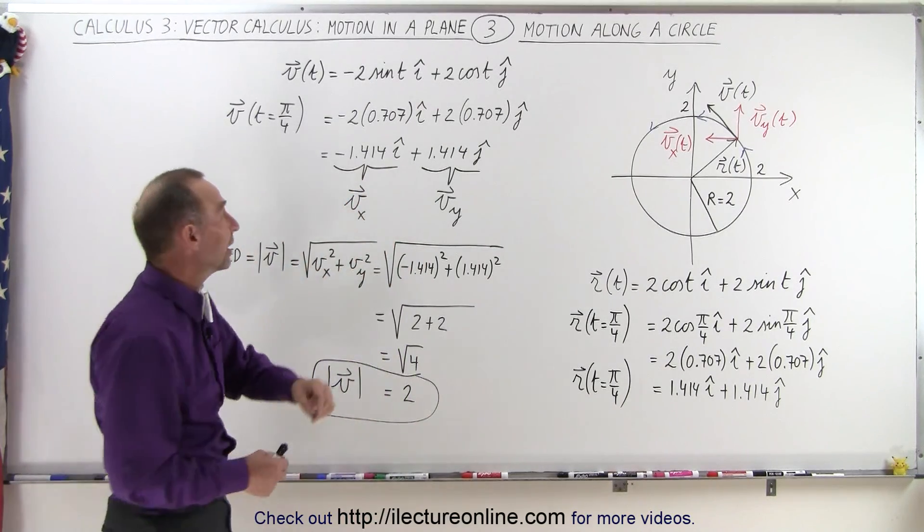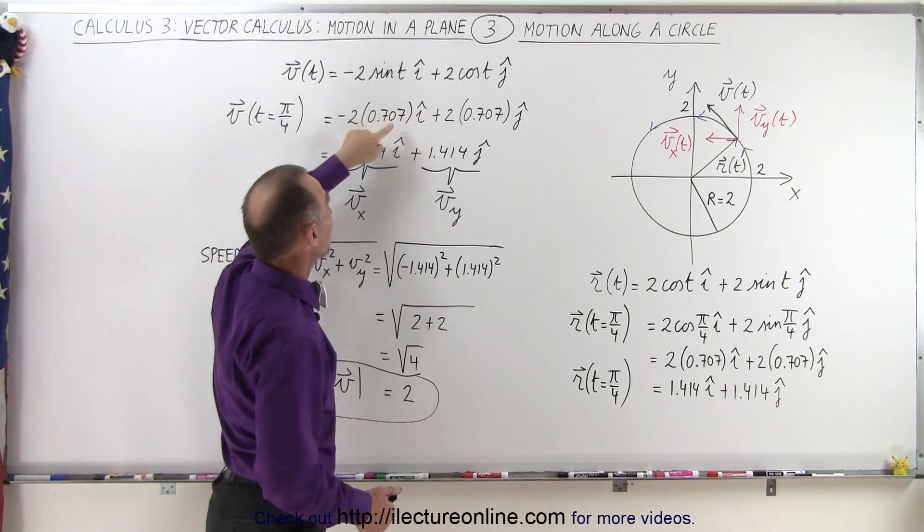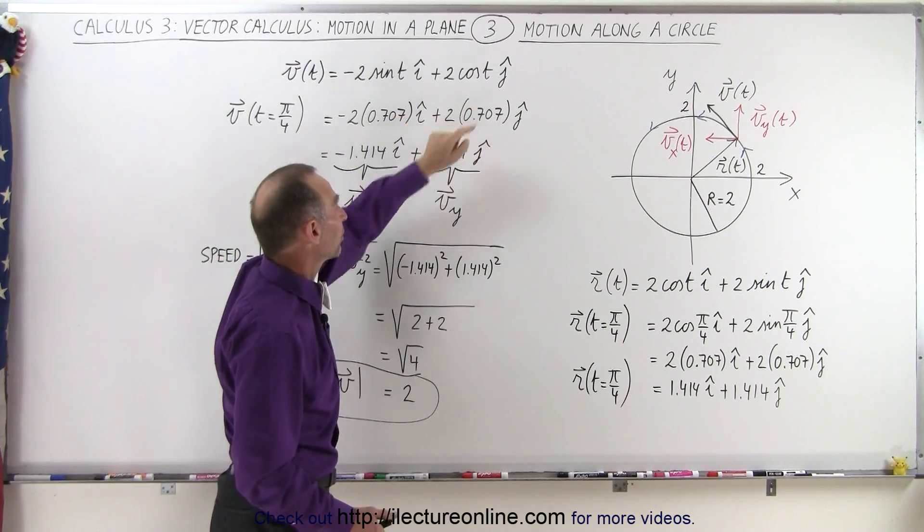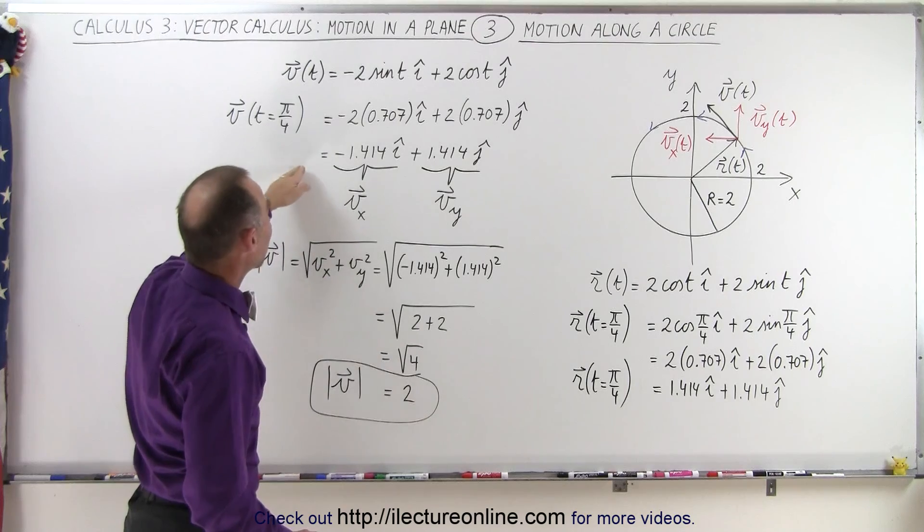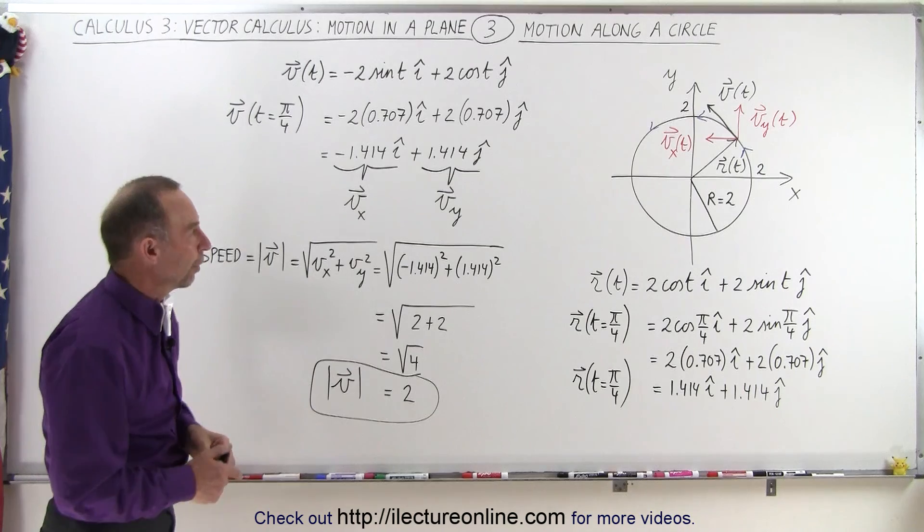If we want to know the velocity when time equals π over 4, we plug that in for t, and we get 0.707 for both components. So here we have now the velocity vector at time equals π over 4.